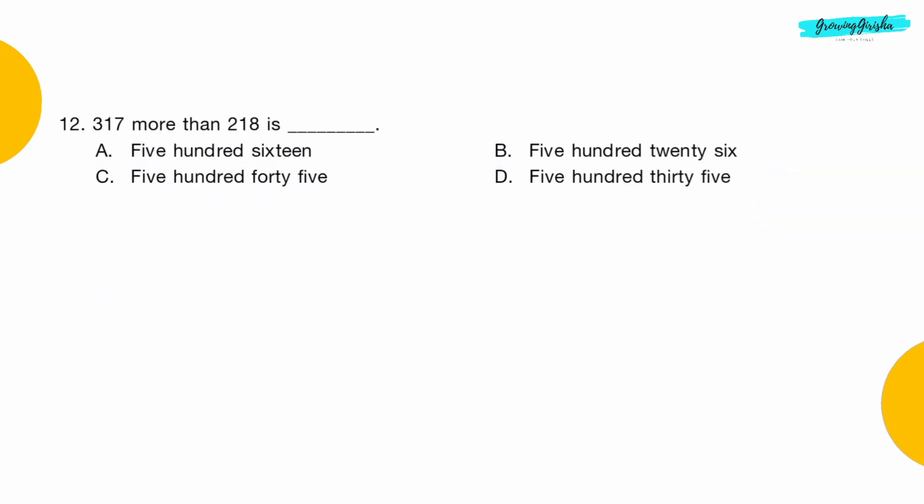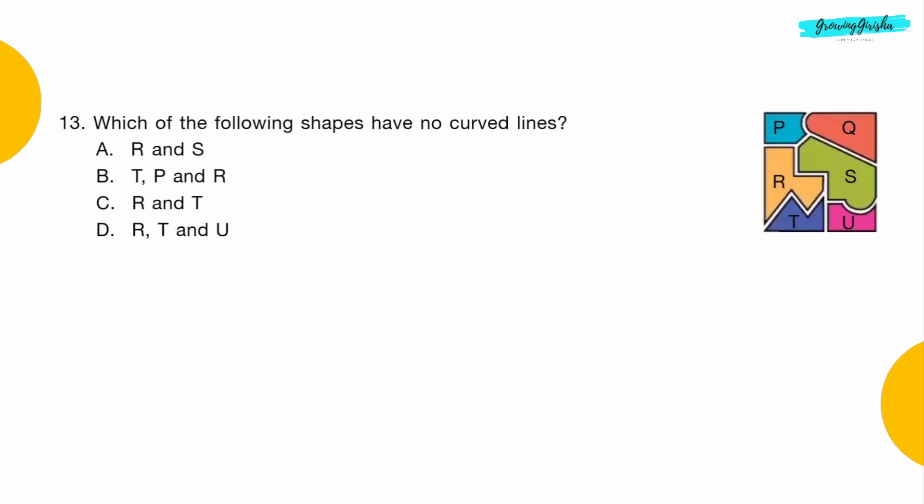Question 12: 317 more than 218 is dash. Option D: 535.